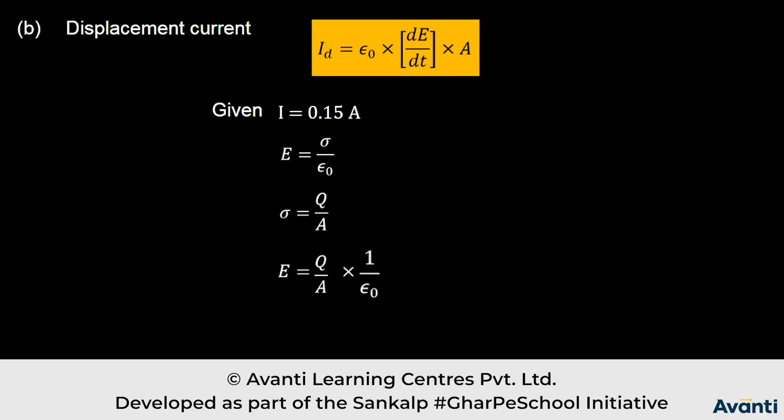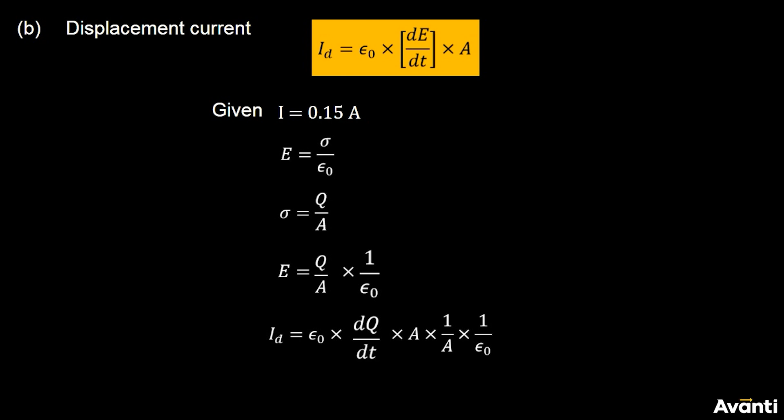Area is constant, epsilon 0 is constant, so A cancels out. Displacement current is dQ by dt, and dQ by dt is nothing but I, 0.15 ampere. Displacement current 0.15 ampere, same as conduction current.